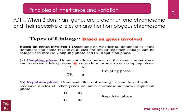The coupling phase is the one in which dominant alleles are present on the same chromosome and recessive alleles are present on the other homologous chromosome. On screen you can see: capital T and capital R — both dominant genes — are on one chromosome, and small t and small r are on the other homologous chromosome.